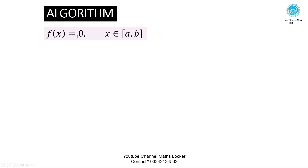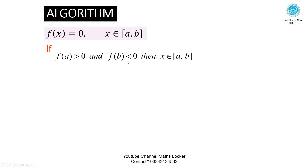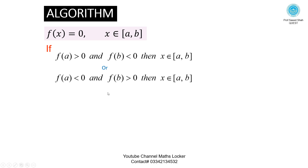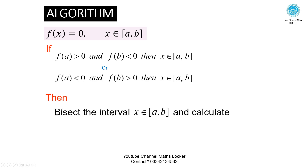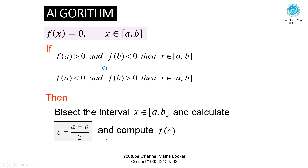Algorithm: f(x) = 0, x belongs to the interval [a, b]. If f(a) > 0 and f(b) < 0, then x belongs to [a, b]; or if f(a) < 0 and f(b) > 0, then x belongs to [a, b]. Bisect the interval [a, b] and calculate c = (a + b) / 2, then compute f(c).